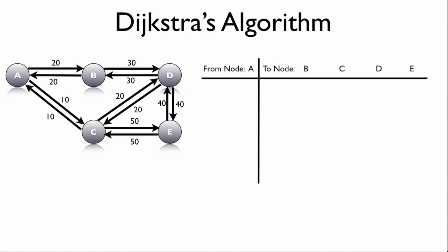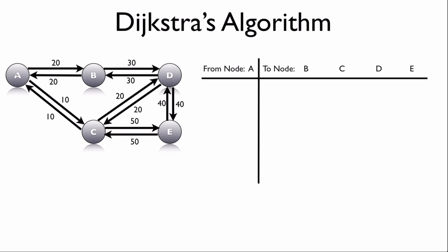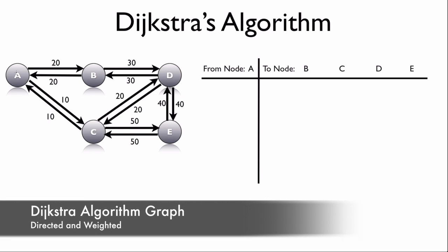Let's consider the operation of Dijkstra's algorithm as used by OSPF. We have nodes A, B, C, D, and E — these are called nodes or vertices. This topology is a directed and weighted graph. Notice the weights: I've made them up like 20, 10, 30 for easy math.